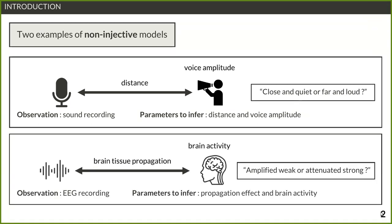A more concrete example, closer to the application I worked on during this research, is related to neuroscience. You have an EEG recording — EEG is an electrical signal recorded on an electrode on the scalp, which serves as a proxy for the physiological activity happening in the brain. When you try to infer from this recording how the brain activity propagated through the brain tissue, you face indetermination: you don't know whether the activity was weak and amplified during propagation, or strong and attenuated.